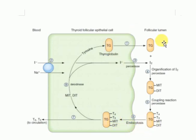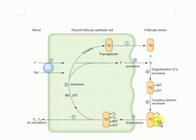The first five steps are involved in the synthesis of thyroid hormone, while this step — endocytosis — occurs when the thyroid gland is stimulated. The cells take back the iodinated thyroglobulin inside the follicular cells. Then Step 7: the lysosomal enzymes digest the thyroglobulin, releasing T4 and T3 into the circulation.